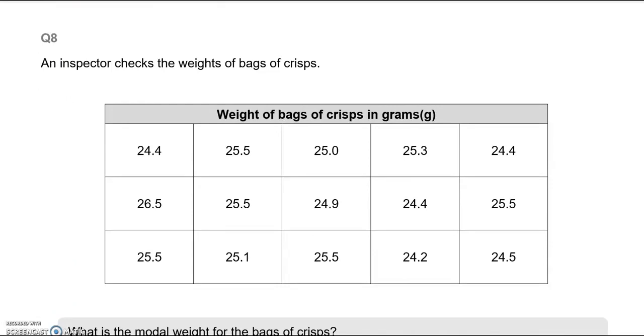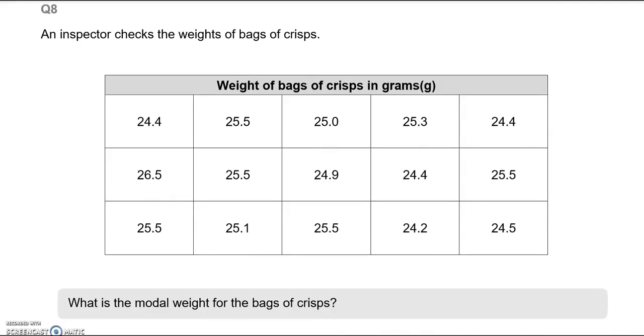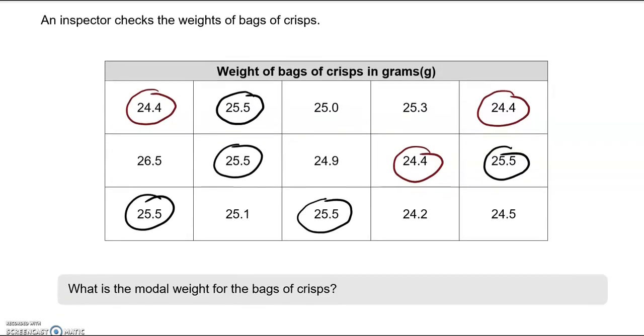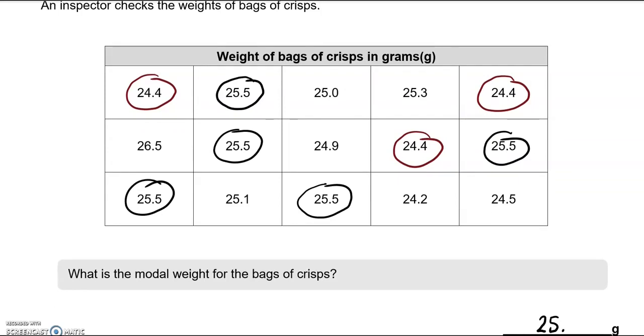An inspector checks the weights of bags of crisps. We've got a number of values. The question is, what's the modal weight of the bags of crisps? So, modal means the most common value. So, having a look at the values that repeat themselves. So, 24.4, that is repeated again here. And we've got it here as well. 25.5 is also repeated. So, we've got it here as well. Here, here and there. The rest of the values are not repeated. So, that means that 25.5 is the modal value, because it's repeated 1, 2, 3, 4, 5 times, whereas 24.4 is repeated only 3 times. So, we'll write it here as 25.5 grams.